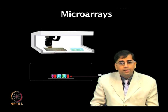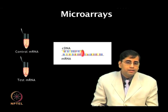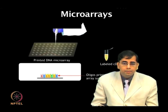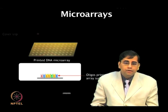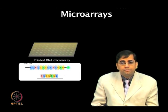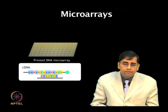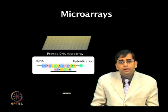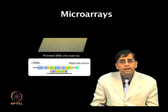In a microarray experiment, the mRNA from control and test samples are extracted and reverse transcribed into their corresponding cDNA. The cDNA samples are labeled with Cy3 and Cy5 dyes, and the mixed cDNA sample is incubated on a printed DNA microarray. This allows hybridization to occur between the probe oligonucleotides on the array surface and the labeled cDNA sample of interest. In this manner, expression levels of thousands of genes can be measured and analyzed simultaneously.